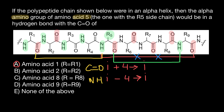Now let's check your knowledge further. Will this carboxyl group make a hydrogen bond with any amino acid? Using the i plus four formula: the carboxylic group of amino acid number two, plus four, is going to bond with the amino group of amino acid number six — so this is going to be a hydrogen bond. What about the amino group of amino acid number eight? Eight minus four is four, so it's going to make a hydrogen bond with the carboxylic group of amino acid number four — here's another hydrogen bond.